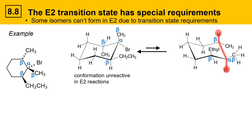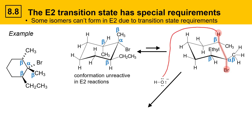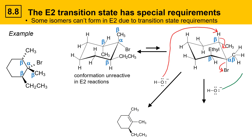After the chair flip, there's one beta position in the ring that is coplanar with the bromine — one trans-diaxial relationship. There's also a reactive beta position outside of the ring: the protons on the methyl group can easily get into the same plane as the bromine, so don't forget about beta positions outside the ring. With a strong base deprotonating the in-ring beta position, we get an alkene product with a double bond between the two carbons bearing methyl groups. Deprotonating the exocyclic methyl beta position leads to a product with an exocyclic double bond.